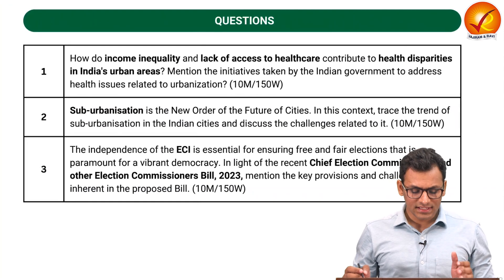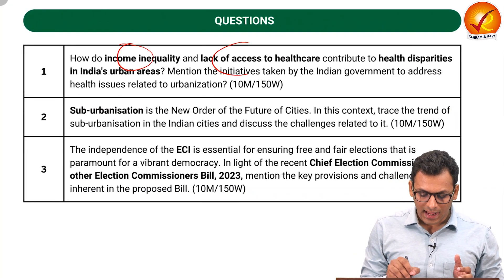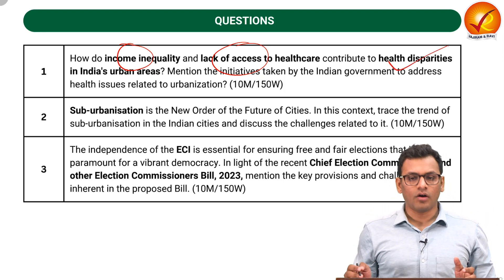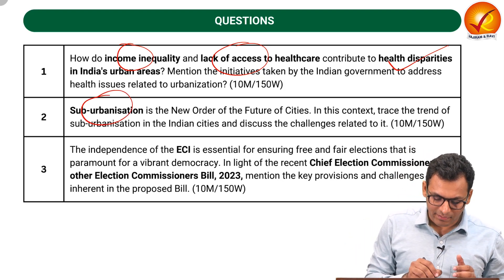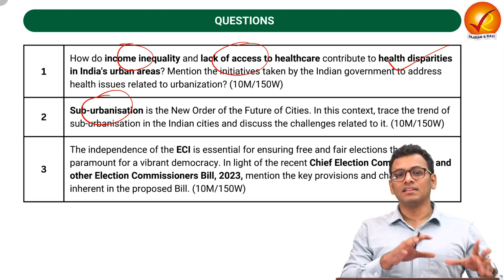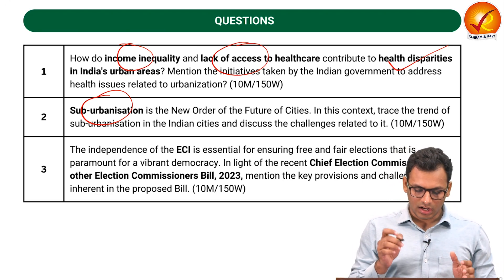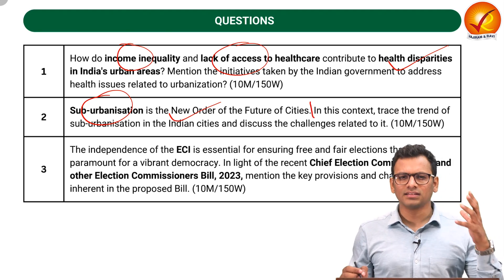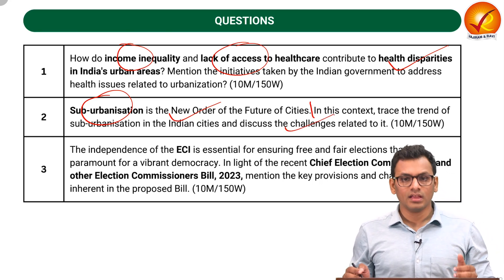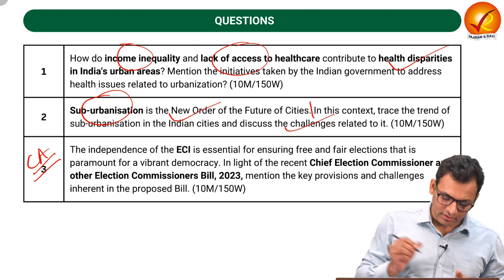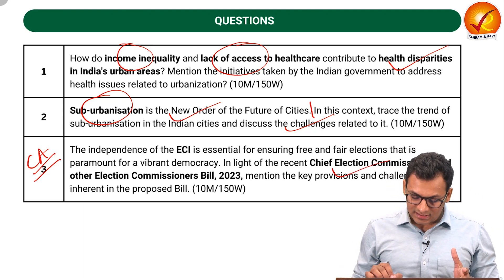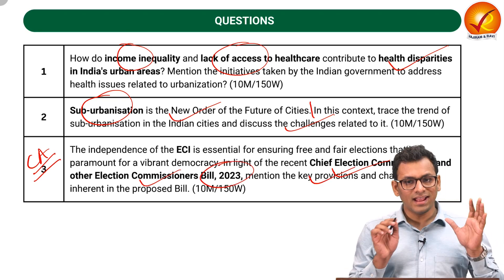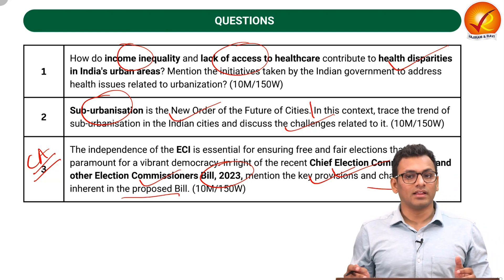The first question concerns income inequality and lack of access to healthcare in urban areas leading to disparities in health outcomes. The second question is about the rise of urbanization and specifically the phenomenon called suburbanization, seen as the new order for the future of cities — we will look at trends and challenges. The third question is current affairs-based, on the CEC and EC bill passed by Rajya Sabha, covering key provisions and challenges.